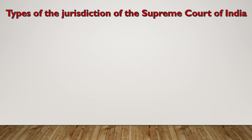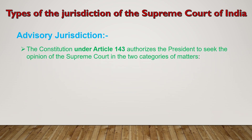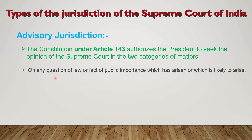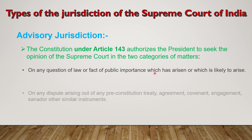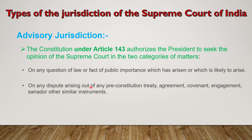Then advisory jurisdiction. The Constitution under Article 143 authorizes the President to seek the opinion of the Supreme Court in two categories of matter: on any question of law or fact of public importance which has arisen or which is likely to arise, and on any dispute arising out of any pre-Constitution treaty, agreement, covenant, engagement, and other similar instruments.